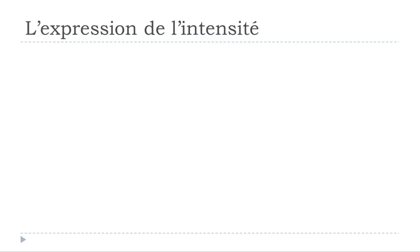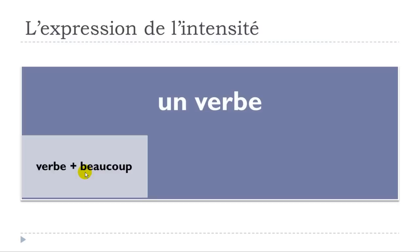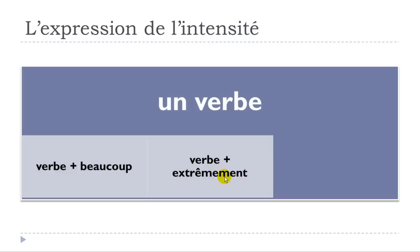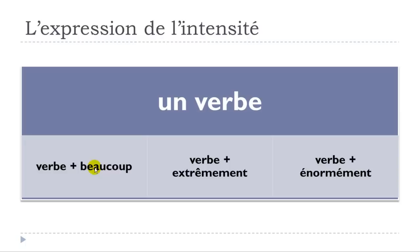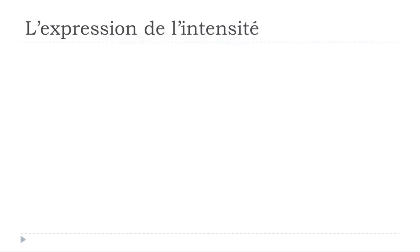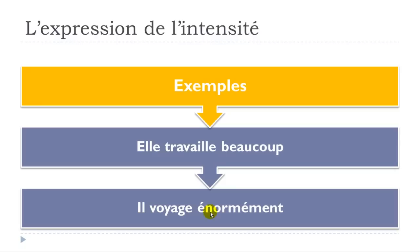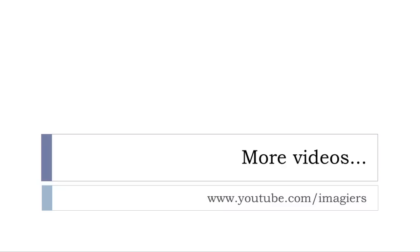The third and last category is with a verb: VERBE + BEAUCOUP, VERBE + EXTRÊMEMENT, VERBE + ÉNORMÉMENT. Examples: ELLE TRAVAILLE BEAUCOUP — she works a lot. IL VOYAGE ÉNORMÉMENT — he travels enormously. Keep in mind that you will have to put them after your verb. Et voilà — vous êtes des spécialistes pour l'expression de l'intensité. Merci beaucoup, passez une agréable journée, au revoir et à bientôt.